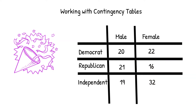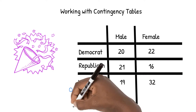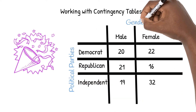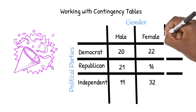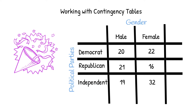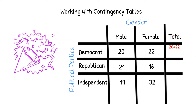A contingency table gives us the opportunity to display the count for each set of responses in a two-question survey. Once we have all our counts, we can find the total count for each category by adding the numbers in each row or each column. By adding 20 male Democrats and 22 female Democrats, we get that there are 42 Democrats overall in our sample.